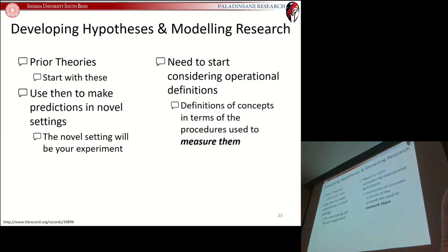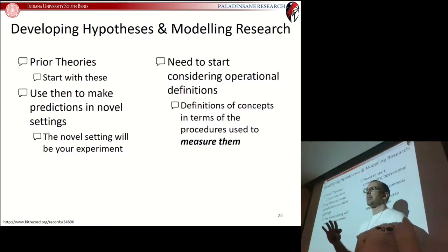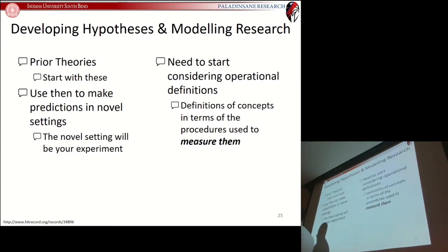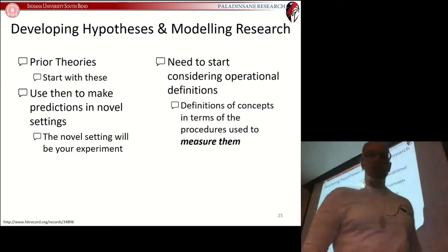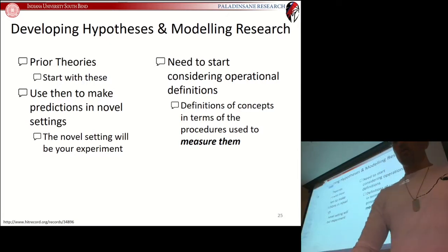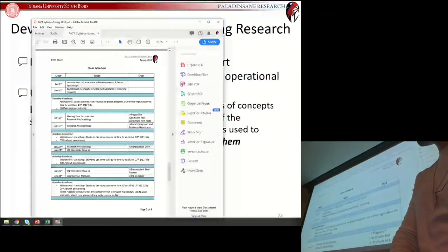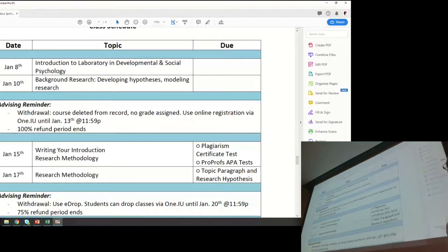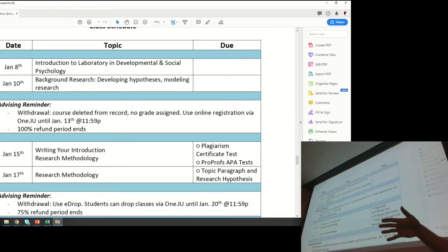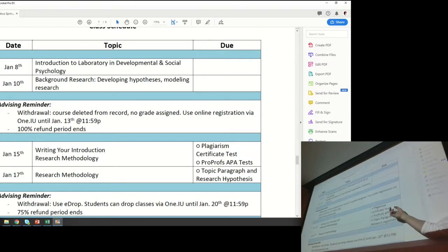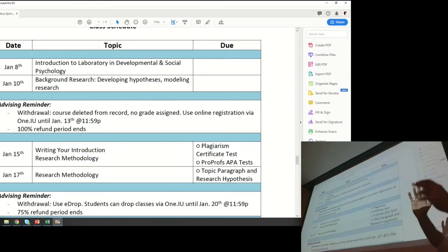Let's wrap up today's class so we know what's happening next week. Your plagiarism certificate test and ProProfs APA test are due by Monday at 11:59. Note there is a glitch on one of the ProProfs APA tests where the maximum you can get is 71% — or actually 75% on that one. You can do these as many times as you like; they're meant to refresh your memory on APA style.